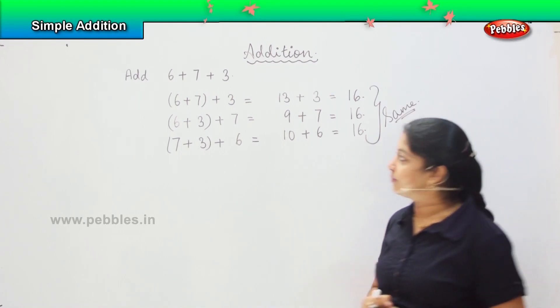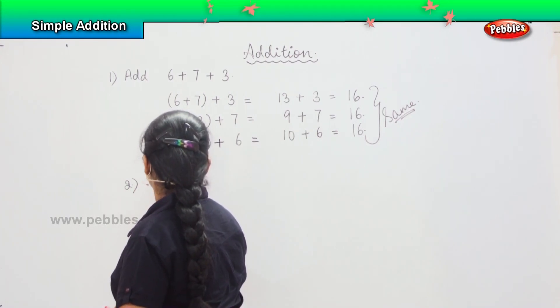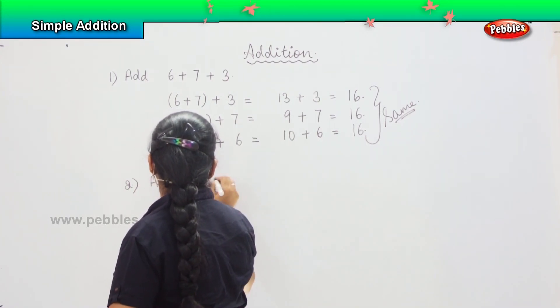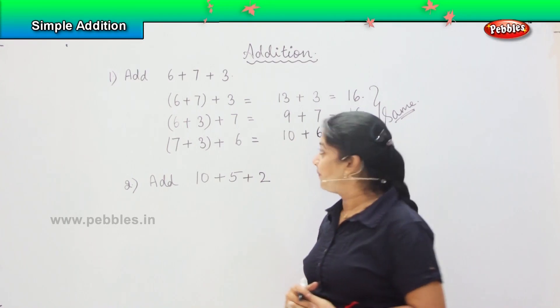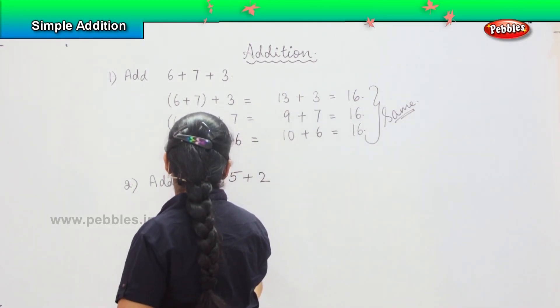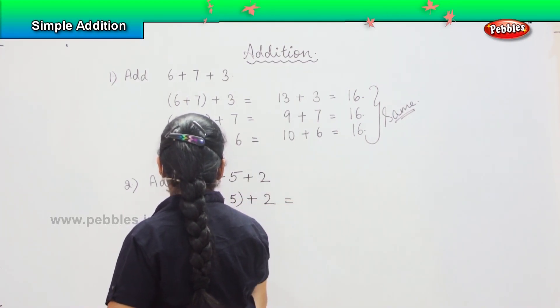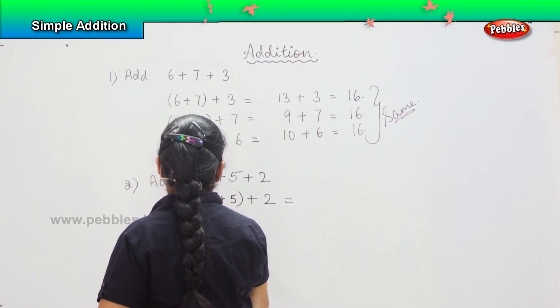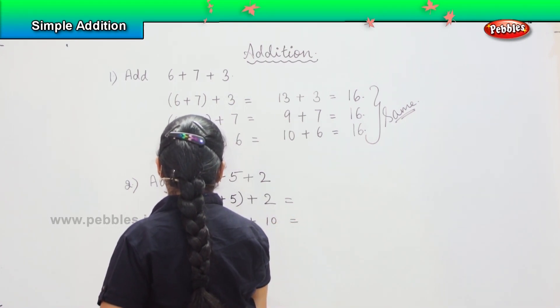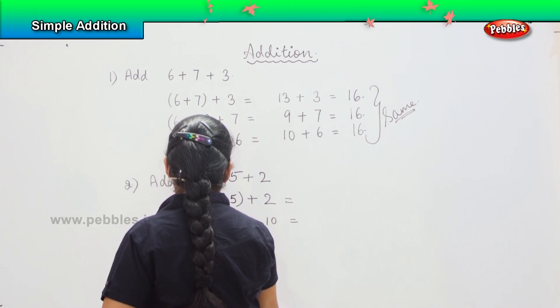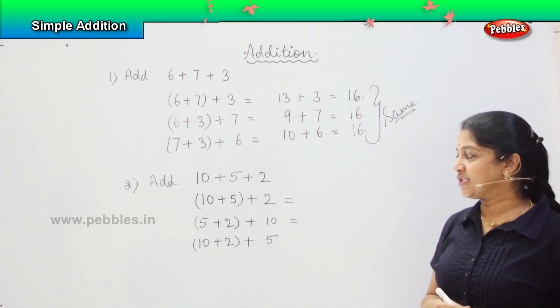Okay, shall we do one more? Your next question is add 10 plus 5 plus 2. So what are the possible ways in which we can regroup? 10 plus 5 plus 2, or 5 plus 2 plus 10, or 10 plus 2 plus 5. So these are the three ways in which I can regroup.